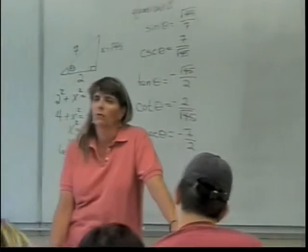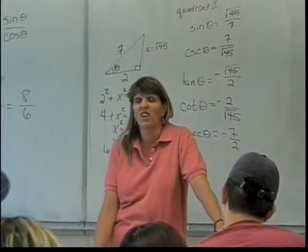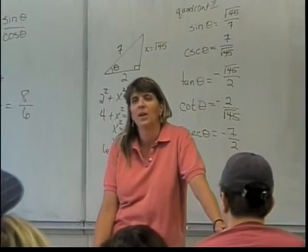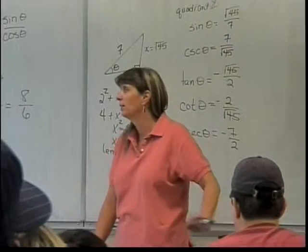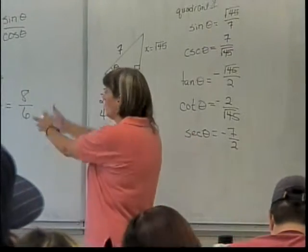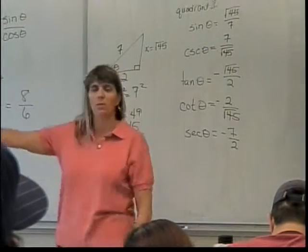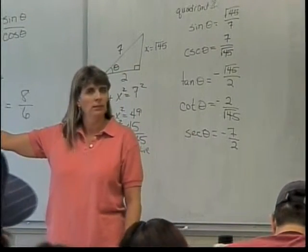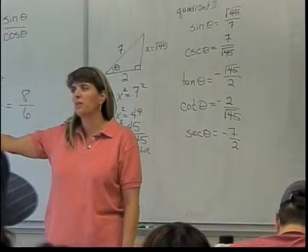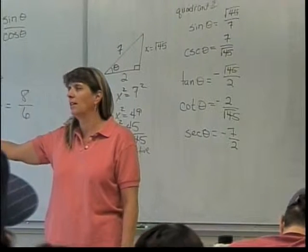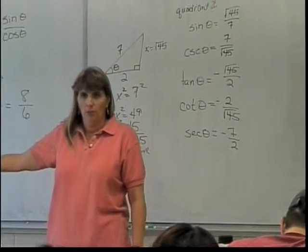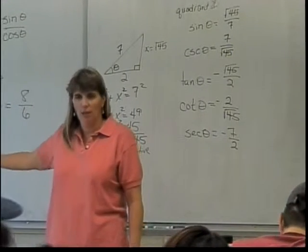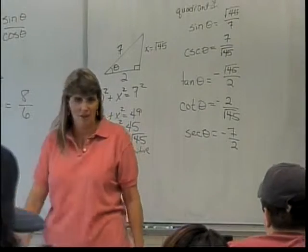What's the sine squared of theta plus the cosine squared of theta for this particular theta? One! It's one for every theta! So I don't even have to do anything — you should just be able to tell me that's one every time. That's the Pythagorean identity that you should have down to an art form before you're done with this class.